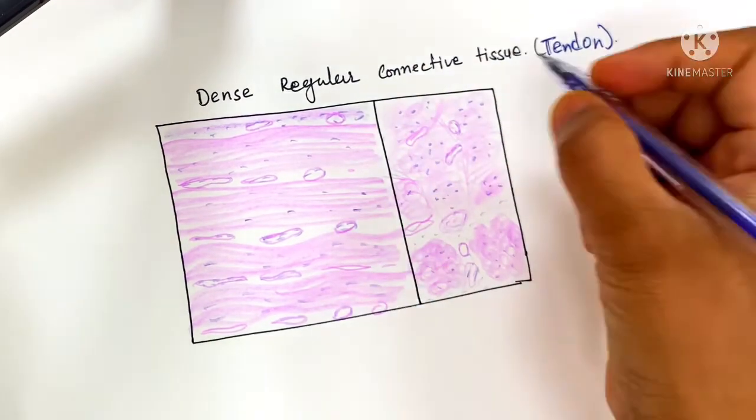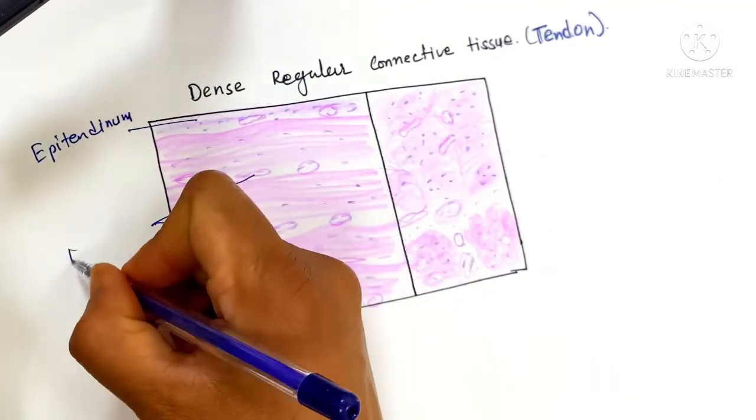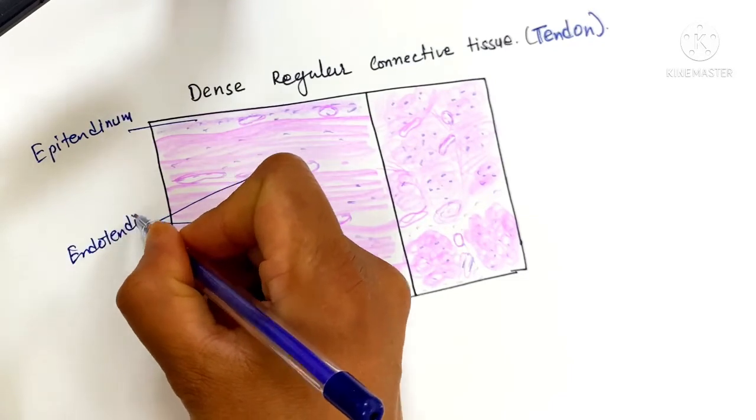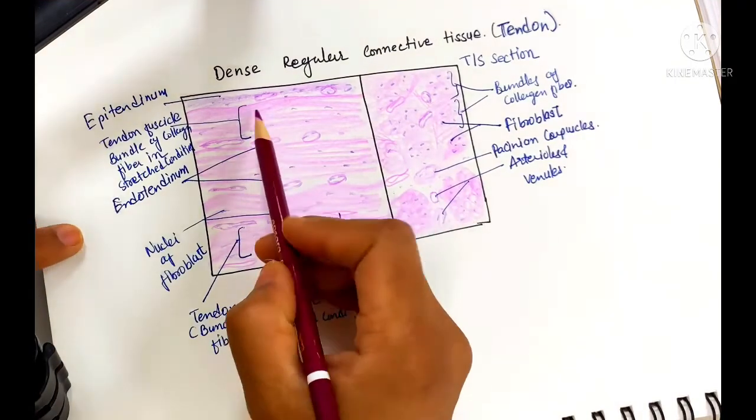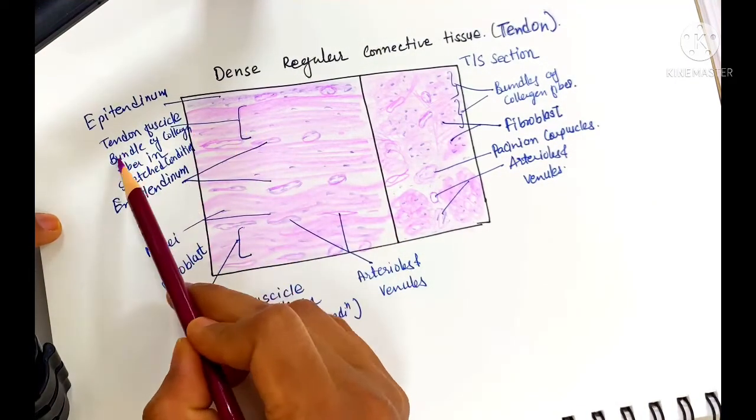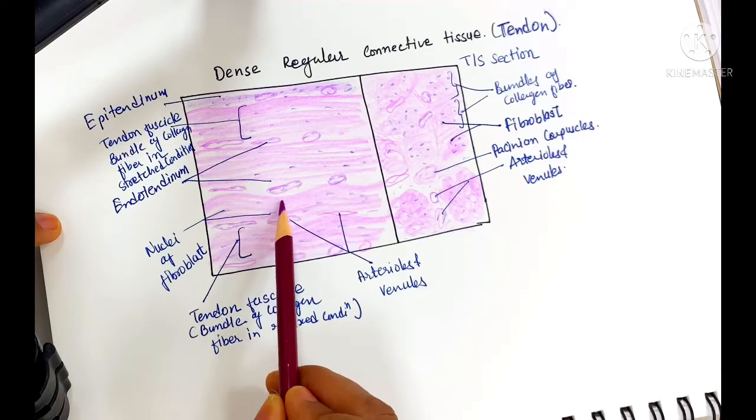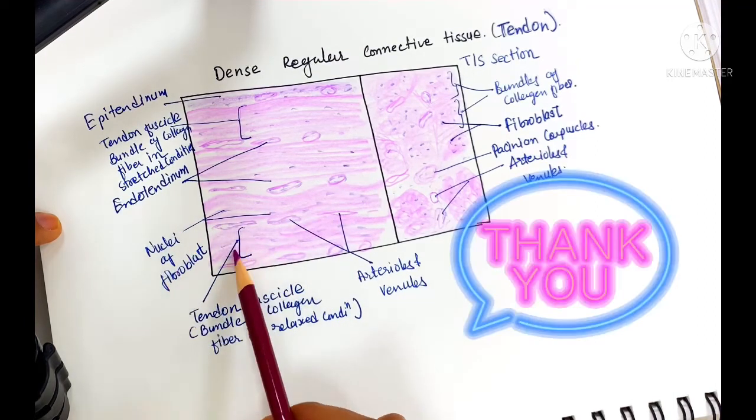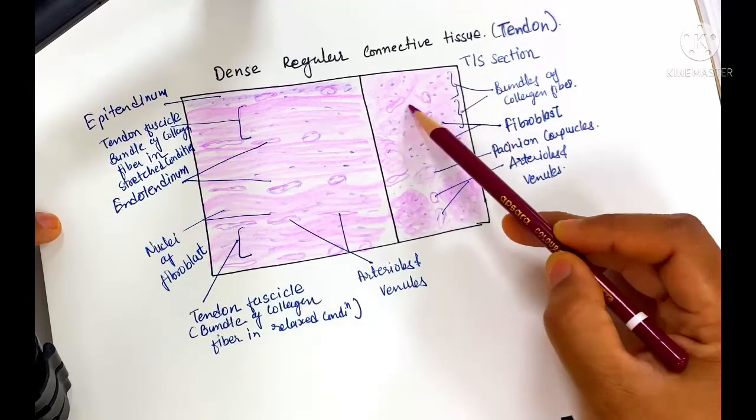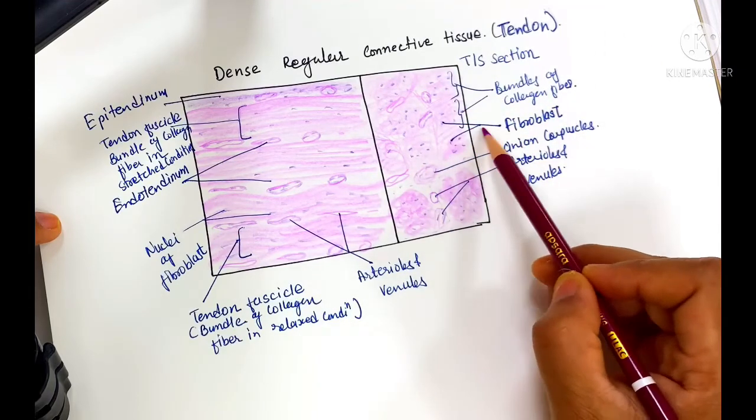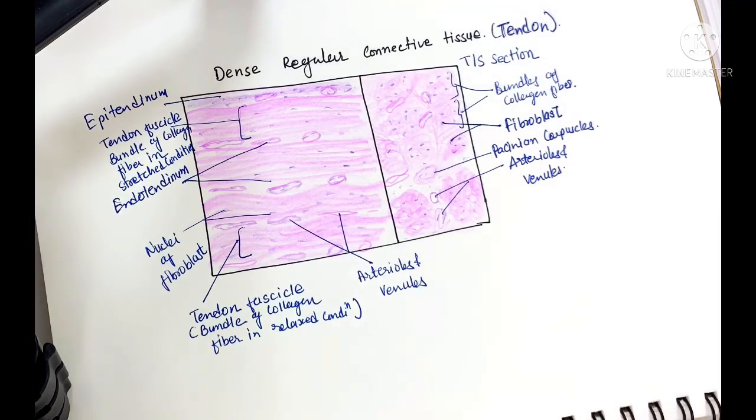Labeling: type 1 collagen fiber covered by epitendinum fibrous tissue. In between the bundle of fibers there is endotendinum. The bundle fiber occurs in bundles in stretched condition. The nuclei in the tendon are known as tendinocytes. The tendon in relaxed condition gives a wavy appearance, with bundles of collagen fiber and tendinocytes.